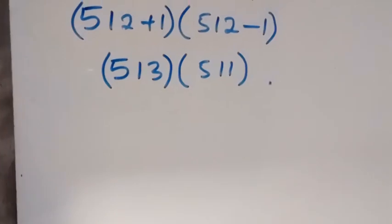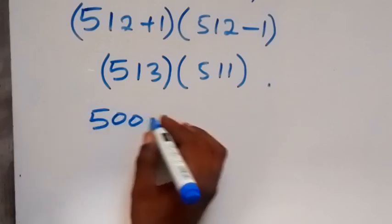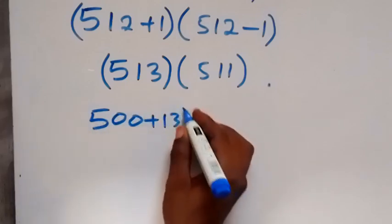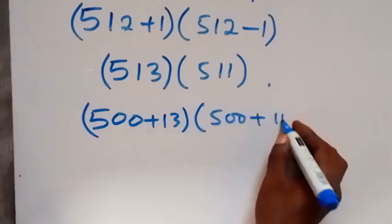So from here we can also write this as 500 plus 13. So we have 500 plus 13 here, then from here we have 500 plus 11.